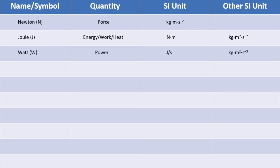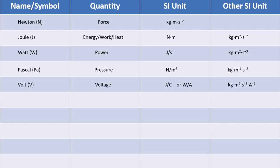Next is the watt, denoted by big W. The quantity associated with the watt is power, and one watt is just one joule per second — which makes sense because power is the amount of work done over time. Then we have the pascal, denoted by uppercase Pa, which is associated with pressure. One pascal is one newton of force spread over one meter squared. Then there are volts, denoted by big V, associated with voltage. Voltage is essentially the push force — think of it as the pressure pushing electrons through a circuit — and it's expressed as joules per coulomb or watts per amp.